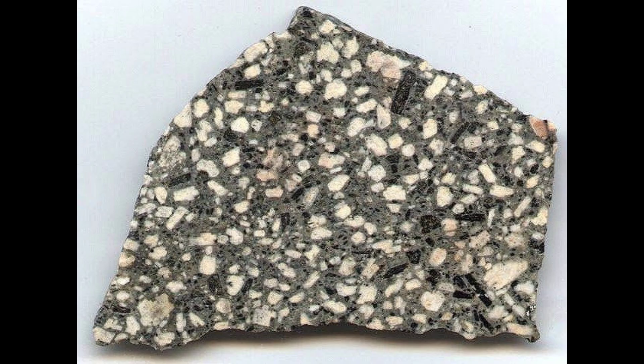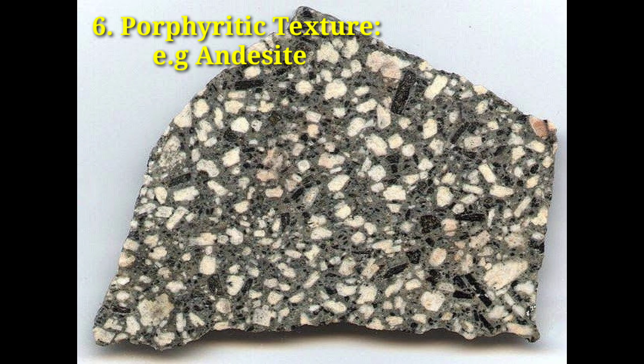6. Porphyritic texture. Illustration of andesite, a volcanic rock. Rocks with porphyritic texture, like this andesite, have larger mineral grains, or phenocrysts, in a matrix of smaller grains. In other words, they display two distinctive sizes of grains that are visible to the naked eye.